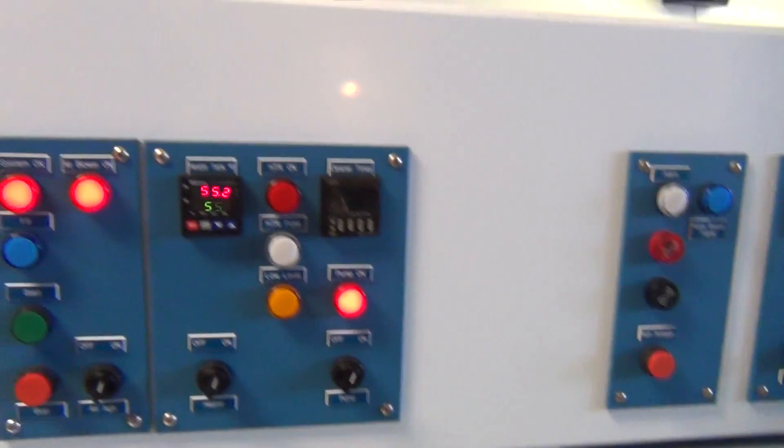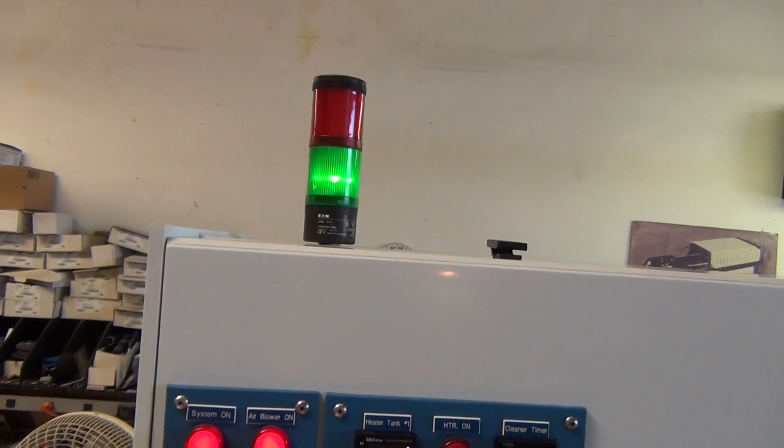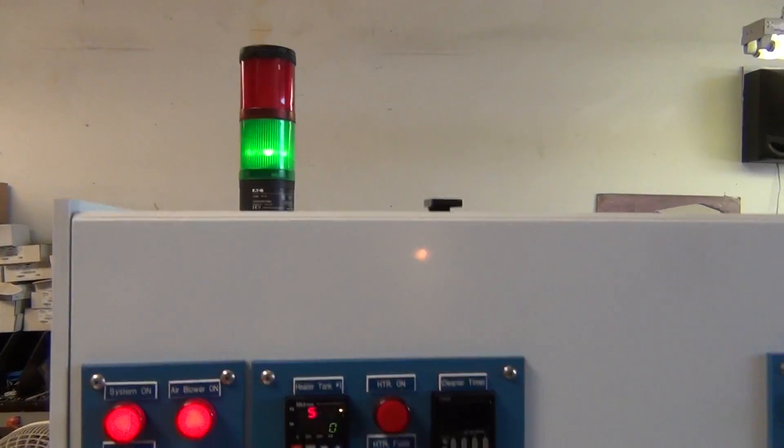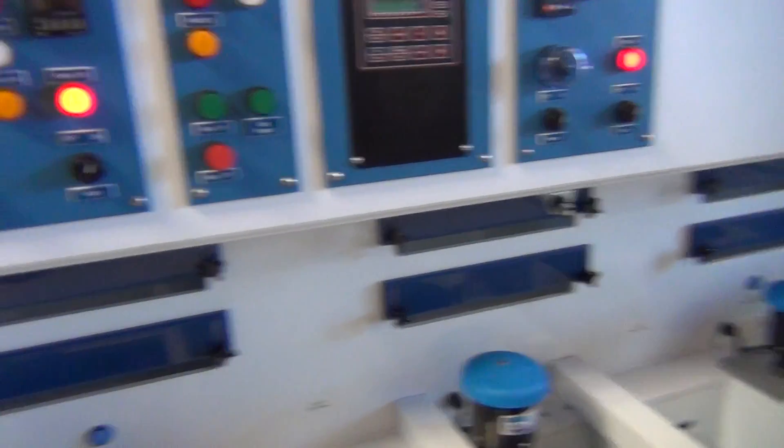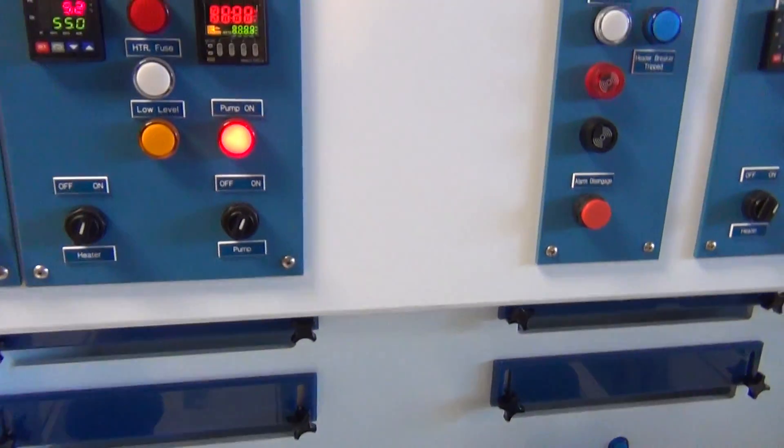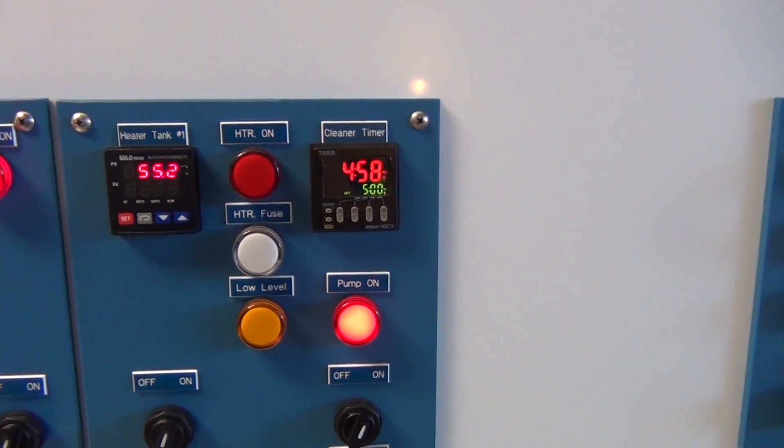This particular system uses a red light and green light to tell you whether tanks are in temperature range or out of temperature range. It also uses communicating process timers.